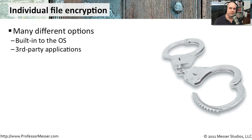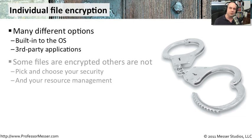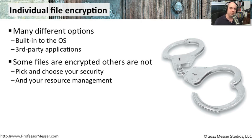We spoke earlier about full disk encryption, but maybe you don't want to encrypt the entire disk. Maybe you just need one file encrypted, or a series of files or directories — not the entire hard drive. In that case, you may want to use capabilities built into the operating system, right-clicking on a folder or file and choosing to encrypt it, or using a third-party utility. This gives you control over how much you encrypt. You don't have to worry about losing the key and not being able to boot the hard drive, but you do need to think about what resources are needed to encrypt and decrypt data on demand.